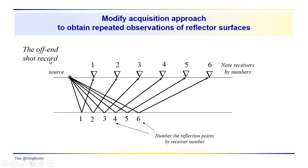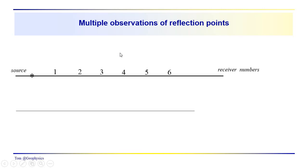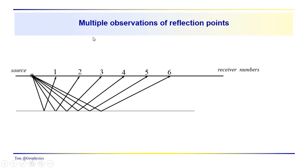Now, using this offset shot record, we have a source, we've got six receivers here. We're just labeling the reflection points by receiver numbers. So we have reflections from points one through six to receivers one through six. And we'd like to modify the acquisition approach to get additional observations of each of these subsurface reflection points.